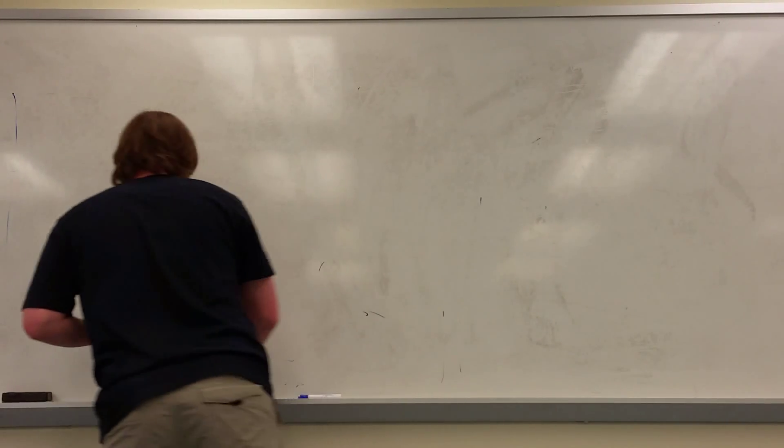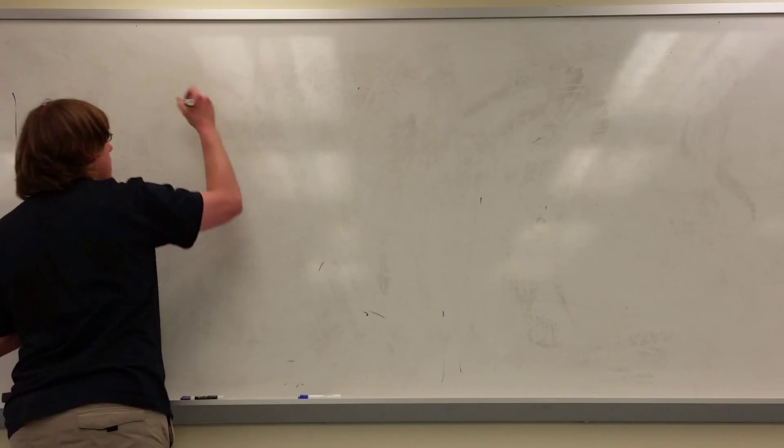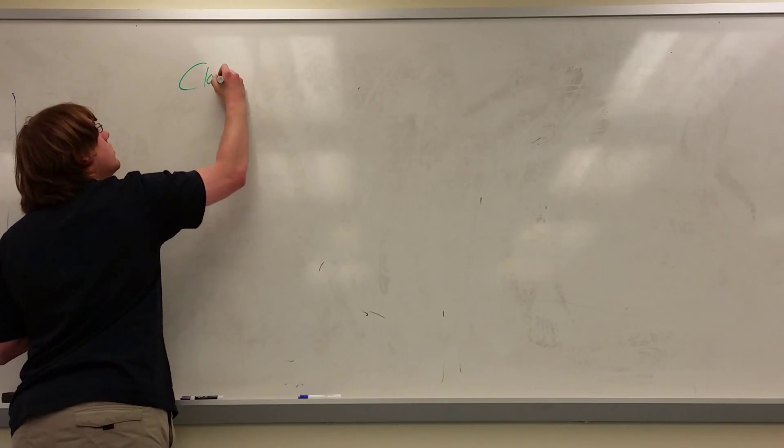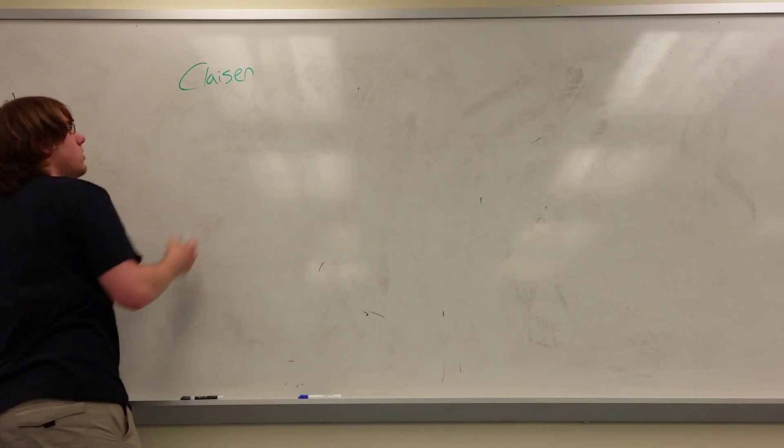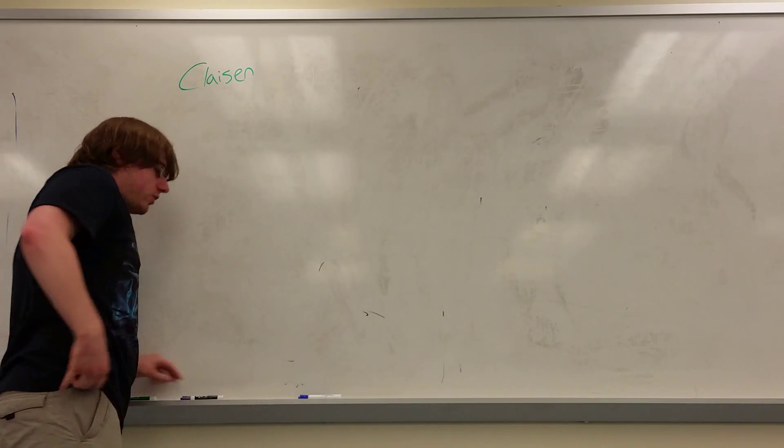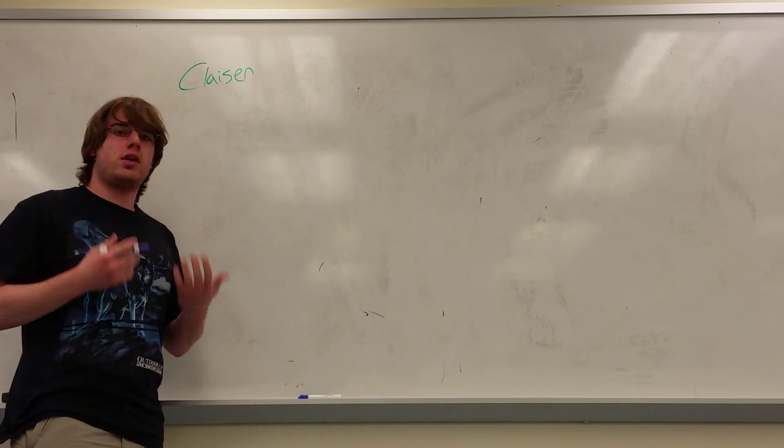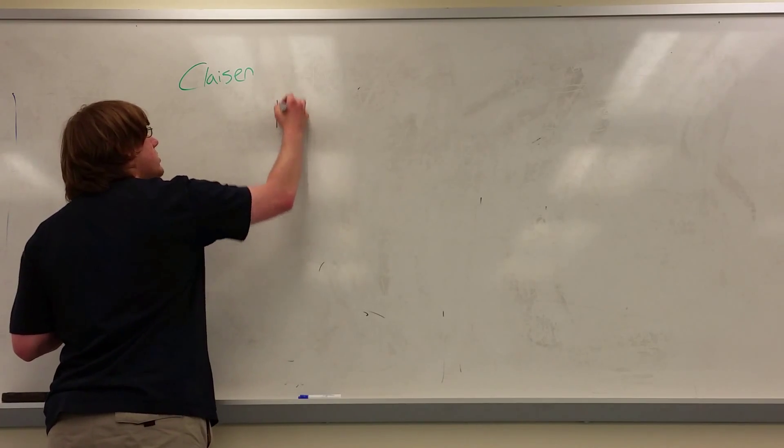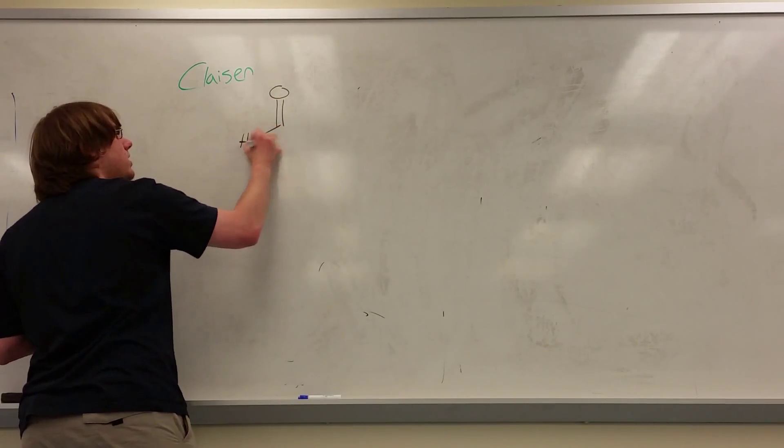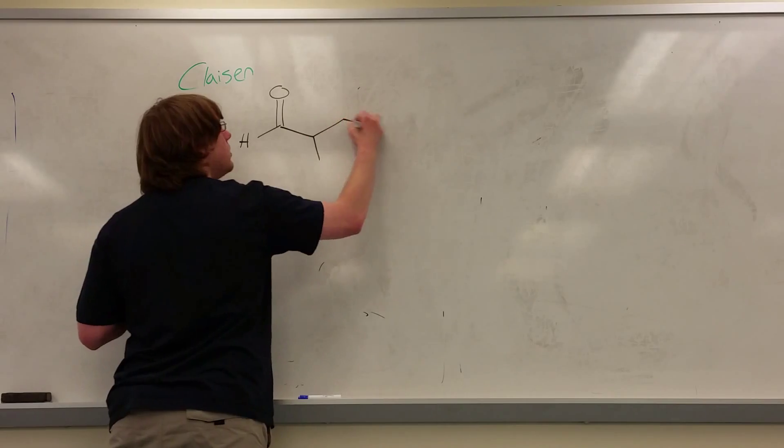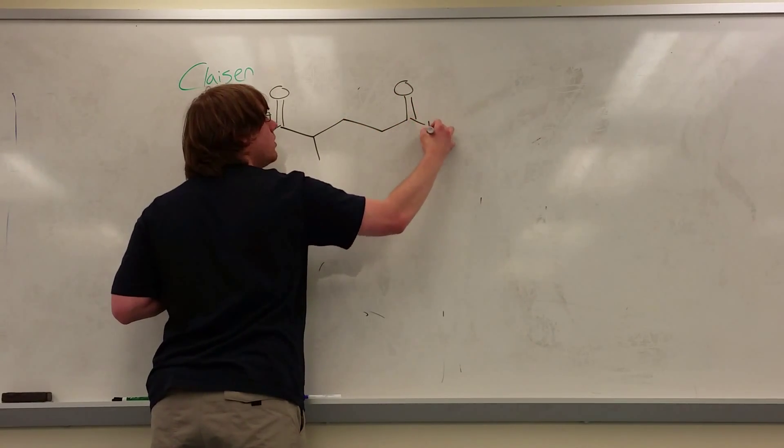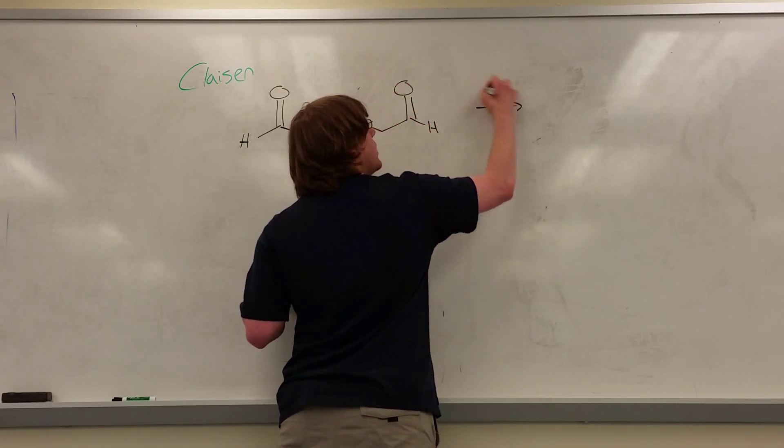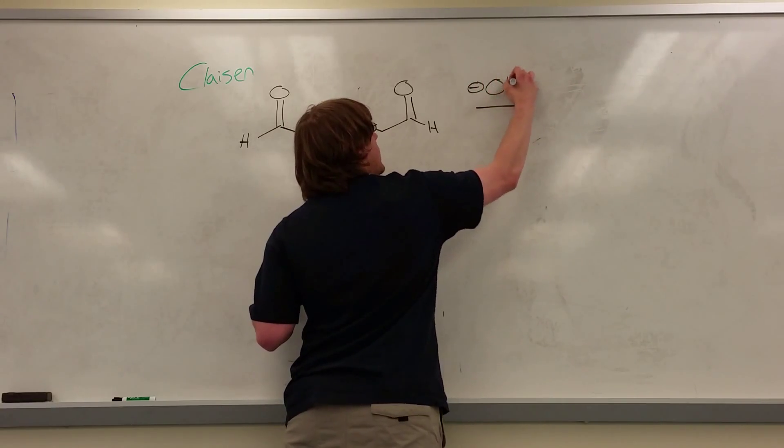All right, the next set of reactions we're going to talk about are called Claisen reactions. The first thing I want to mention is how do you tell if you're doing a Claisen versus an aldol? We saw before that aldol condensations typically involve aldehydes, and then your base is typically an OH-.